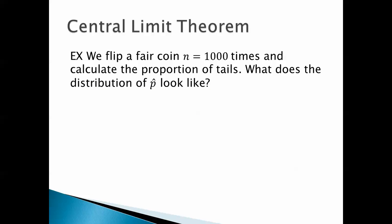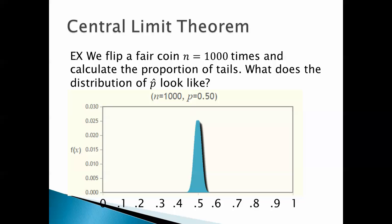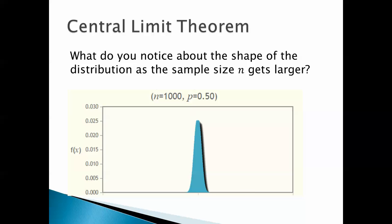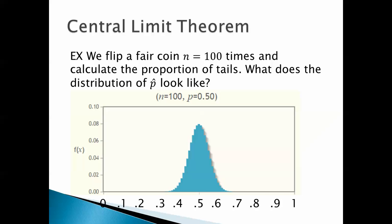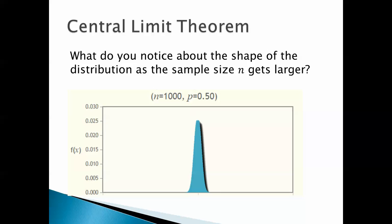How about we flip a fair coin n equals 1,000 times and calculate the proportion of tails? What does the distribution of p-hat look like? Here's what it looks like. What do you notice about the shape of the distribution as the sample size n gets larger? Well, it gets thinner — it's narrow, it's spiky. And it approaches a normal distribution. The one we were looking at earlier is kind of pixelated, like Minecraft, whereas this one is much smoother. It's approaching a normal distribution, that familiar bell-shaped curve.